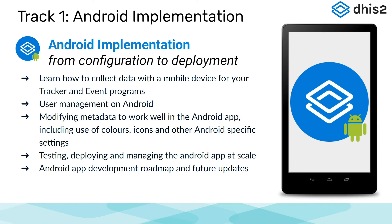The Android Implementation Track covers a number of topics, including collecting data with an Android device for events and Tracker, managing users on Android, configuring your programs to take advantage of mobile features and layouts, best practices on testing, deploying, and managing Android at large scale, and reviewing the deployment roadmap and planned updates for Android.